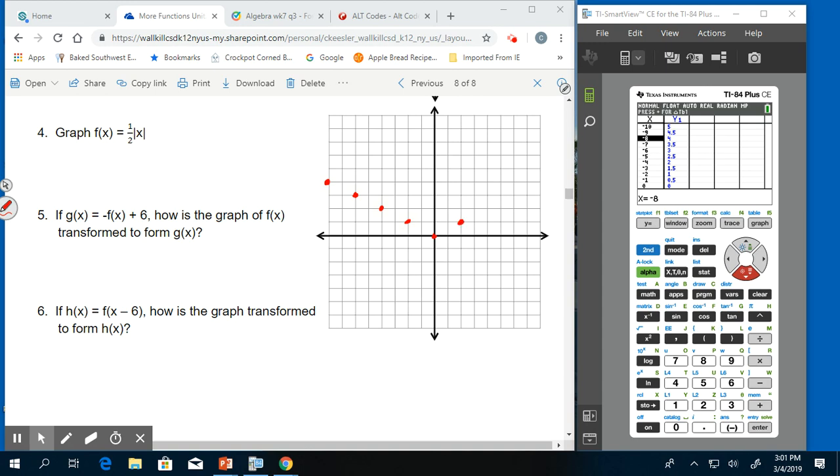Then I'm going to go up 1 over 2 to get 2, 1. Up 1 over 2 to get 4, 2. And then up 1 over 2 again to get 6, 3. And up 1 over 2 again to get 8, 4. So that number out in front of the absolute value kind of works like your slope. You just have to understand absolute value. So this red line is going to be my f of x.